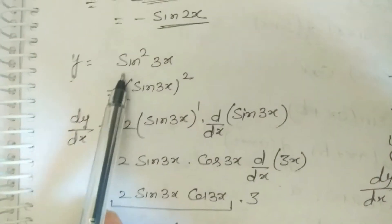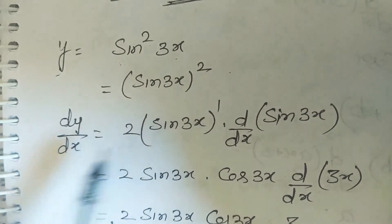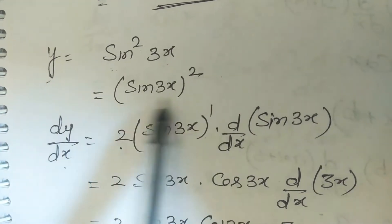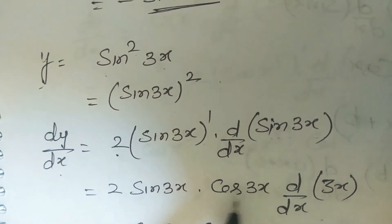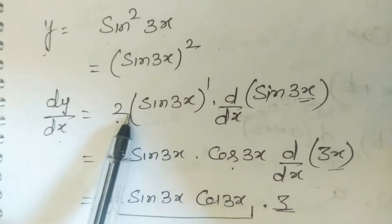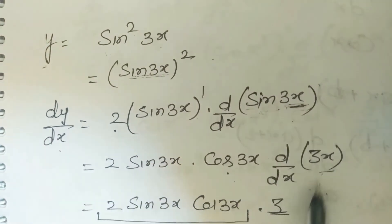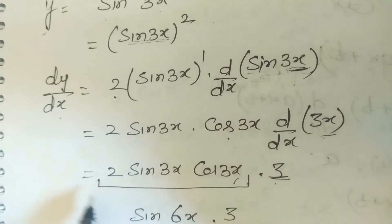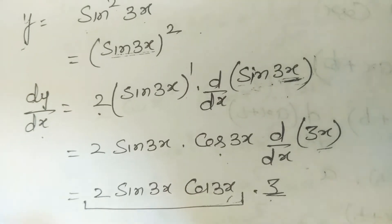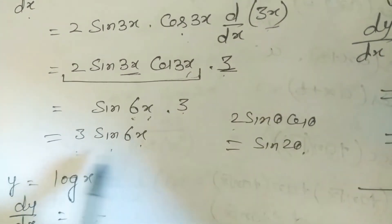Example: derivative of sin²(3x). Apply chain rule: 2·sin(3x)·d/dx[sin(3x)] = 2·sin(3x)·cos(3x)·3 = 6·sin(3x)·cos(3x). Using identity 2 sin θ cos θ = sin 2θ with θ = 3x: this equals 3·sin(6x).